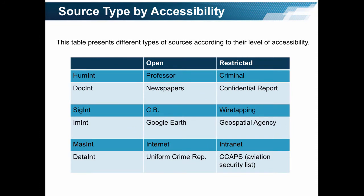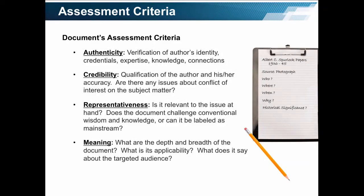This table presents different types of sources according to their level of accessibility. CB means citizens banned. Documents should be subjected to the following assessment criteria. Authenticity relates to the verification of the author's identity, his or her credentials, expertise, knowledge, and connections. Credibility of the documents depends on the qualification of the author and his or her accuracy. Any issues about conflict of interest on the subject matter should be considered a priori.